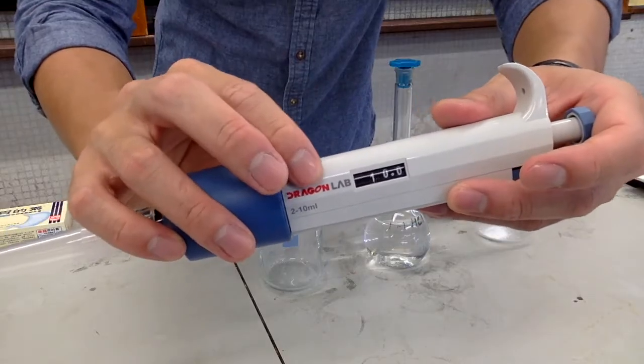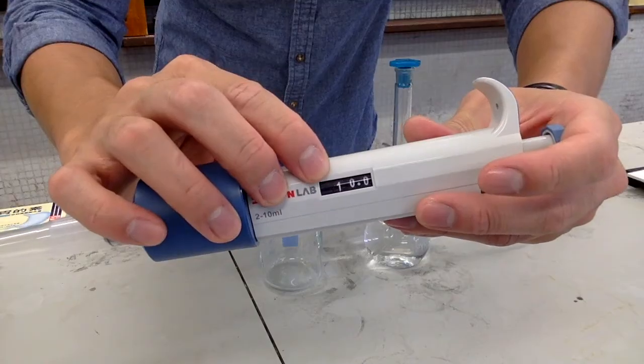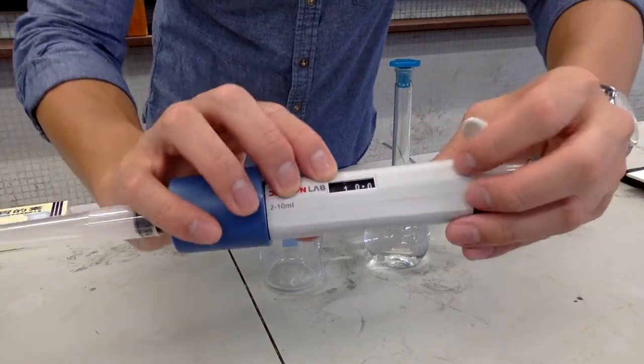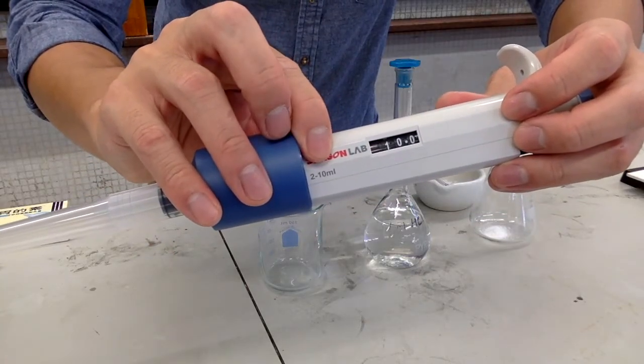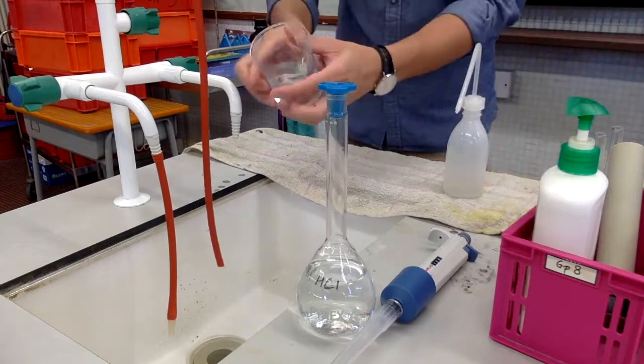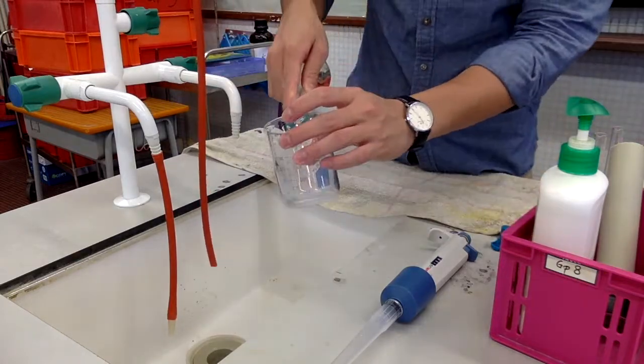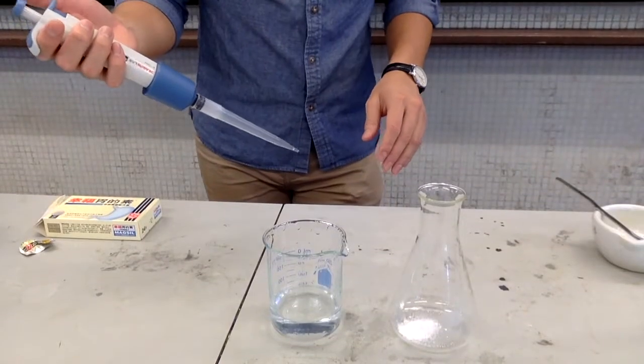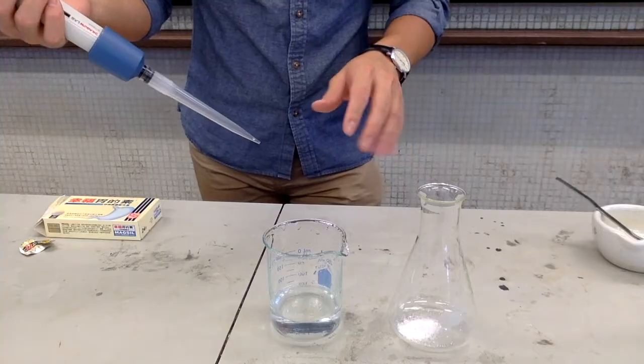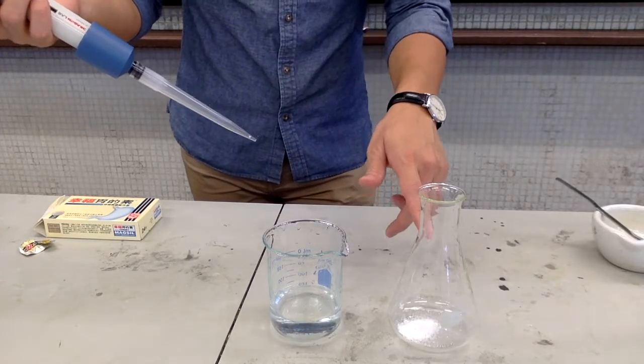As you can see from the scale here, it reads 10 and this micropipette can measure from 2 ml to 10 ml. Now, transfer 20 ml of hydrochloric acid into the conical flask.